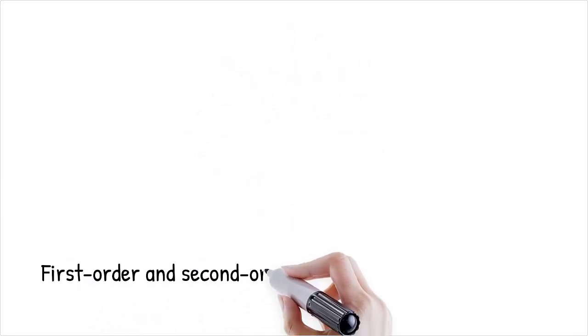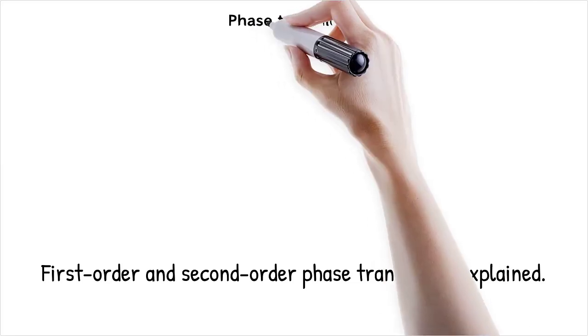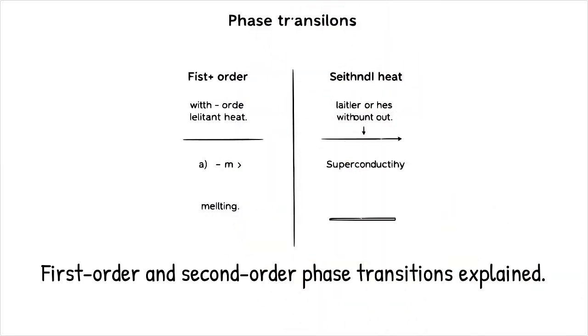Phase transitions are categorized into first-order transitions, involving latent heat, such as melting or boiling, and second-order transitions, no latent heat, such as superconductivity, which explain the diversity of transitions.